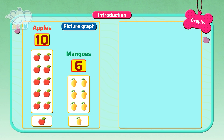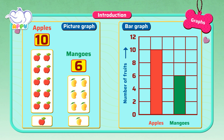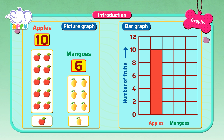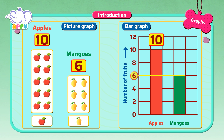Now let's look at bar graphs. In this bar graph we have the names of the fruits at the bottom, and for every fruit we have a bar. The bar for apples has a height of 10, so we have 10 apples. The bar for mangoes has a height of 6, so we have 6 mangoes.